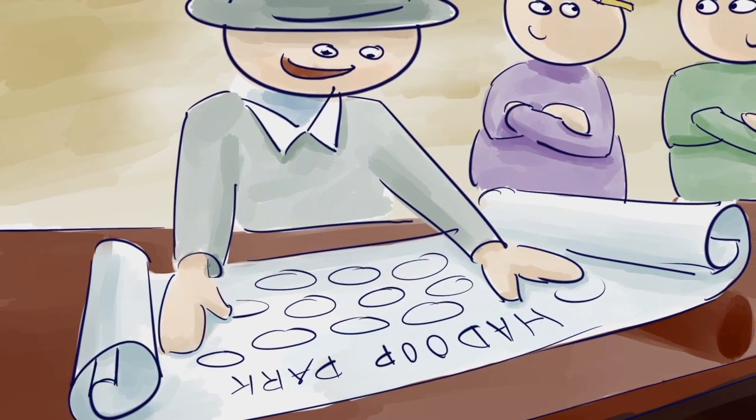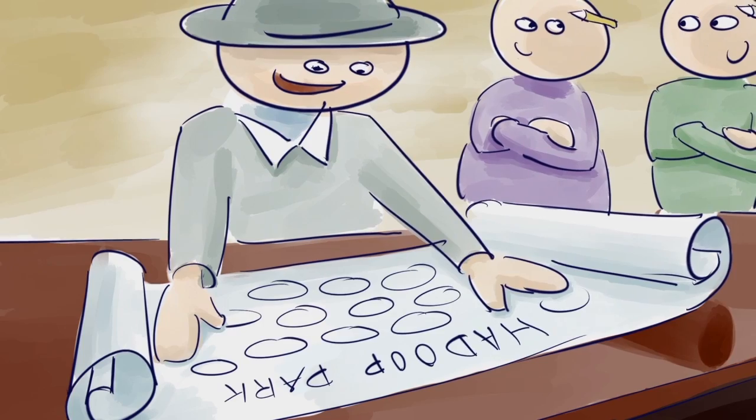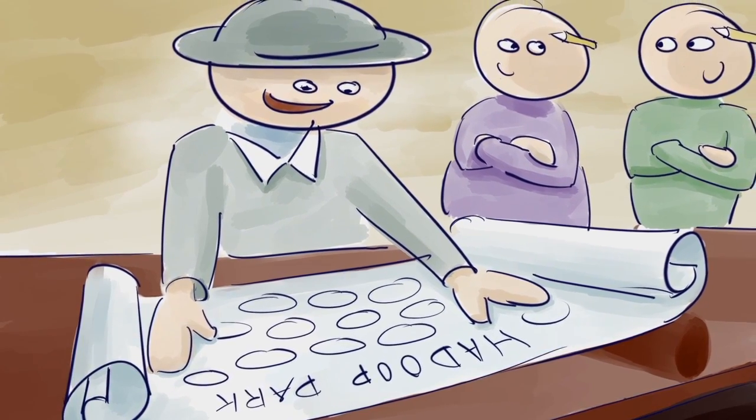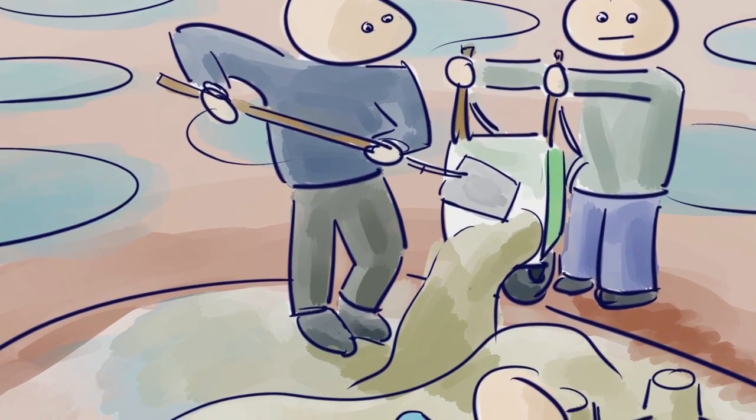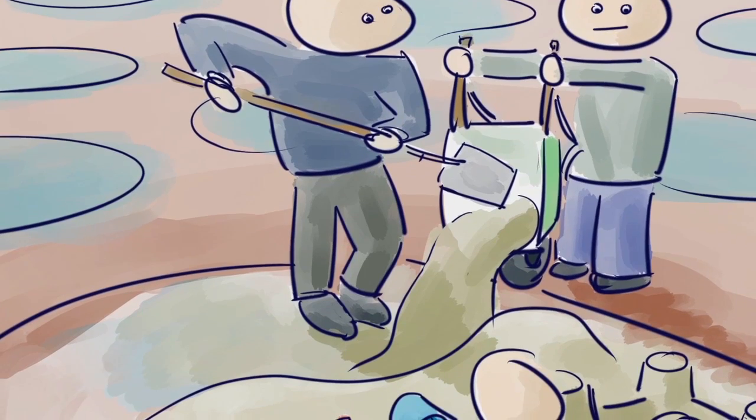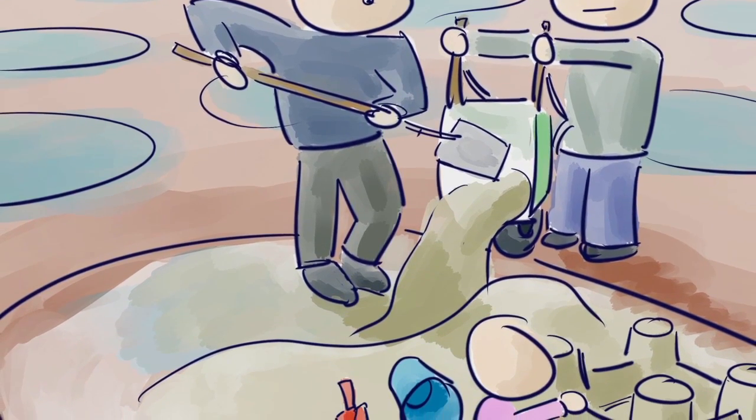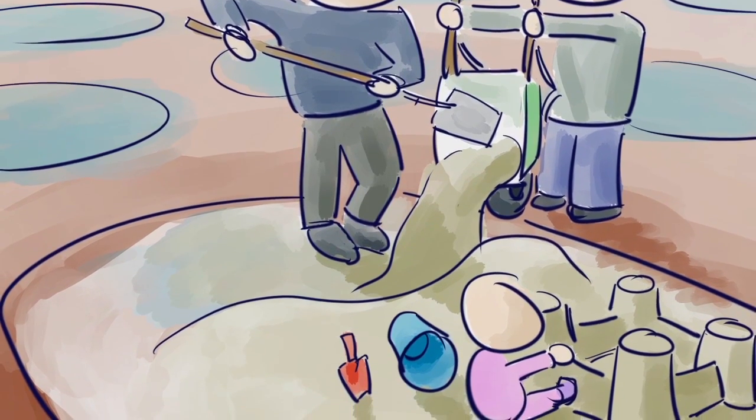This small community effort became popular, and the story of Hadoop Park spread to other villages close to the ocean, and they built similar water processing systems. As the ponds were made of readily available natural materials, they would sometimes develop defects or become unusable. In time, people from the different villages figured out ways to decommission worn-out ponds and commission new ones.